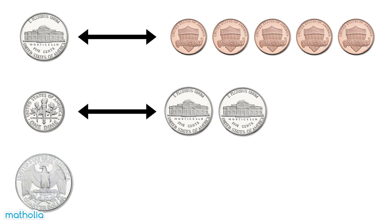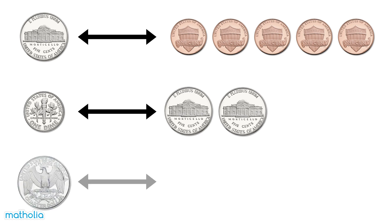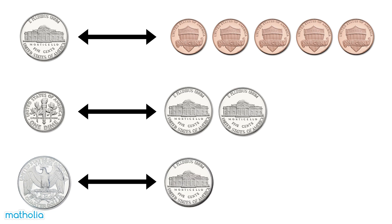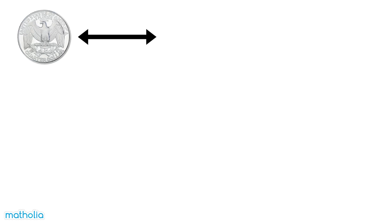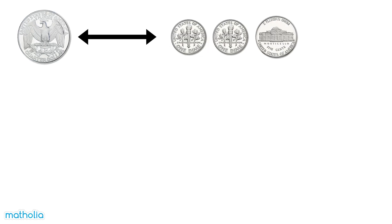How many five cent coins would it take to make up one quarter? One quarter is worth five five cent coins. We can also make up a quarter using two dimes and one five cent coin.